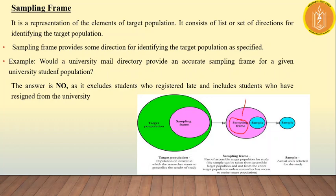For example: would a university mail directory provide an accurate sampling frame for a given university population? If we want to study university students, we have to take a sample. But can we use the mail directory as our sampling frame? No — because students who registered late will not be included in the directory.